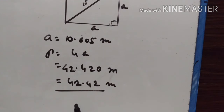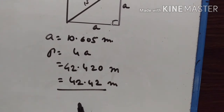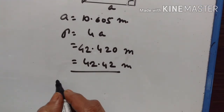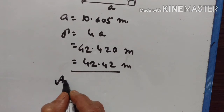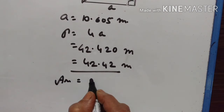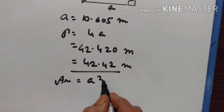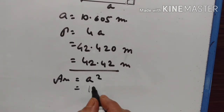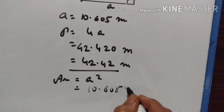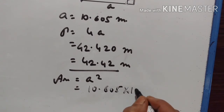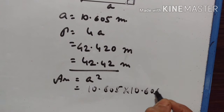Let us find the area now. Area is equal to a squared, that is 10.605 into 10.605.